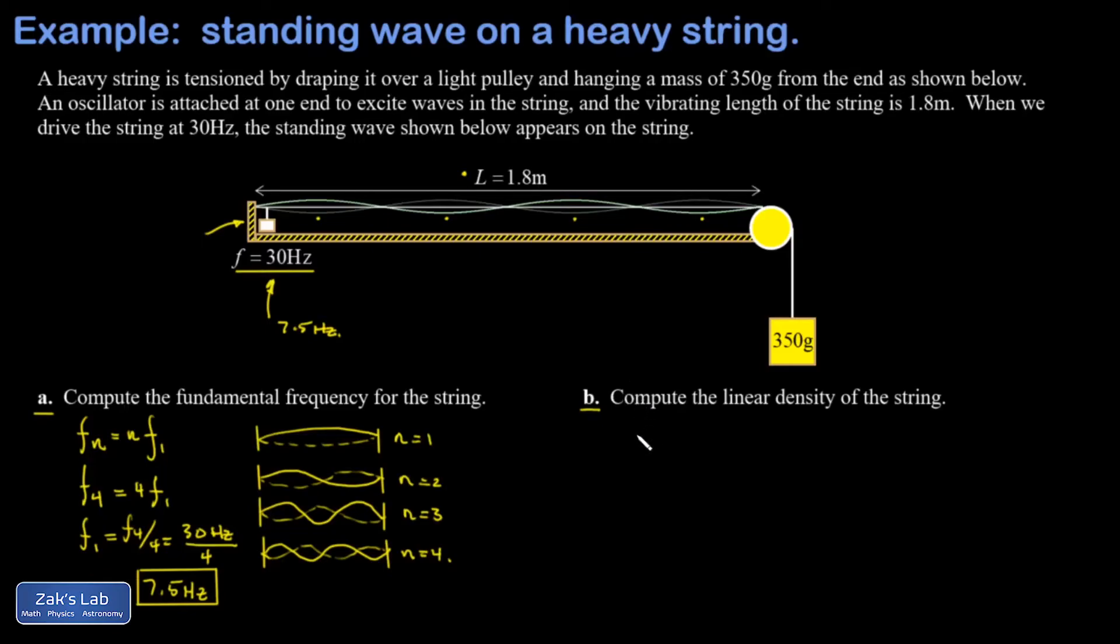First of all, the wave speed is related to the frequency and the wavelength by v equals f lambda, and I'll post a link to the video where that was first introduced. Second, the wave speed is related to the tension in the string and the linear density of the string by square root T over mu, where mu is the linear density, and I'll post a link to the video where that was first introduced as well.